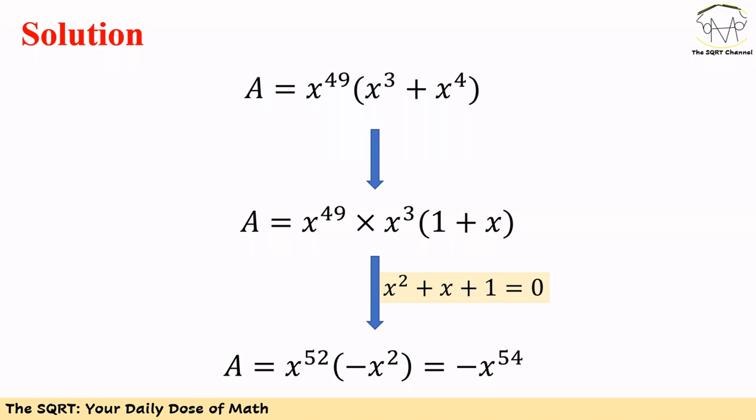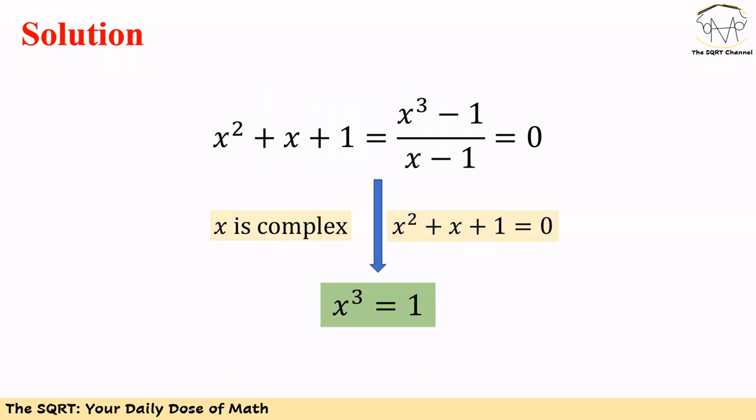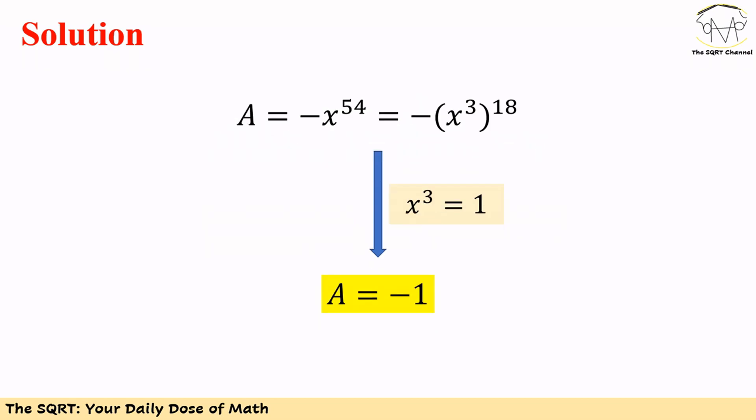To simplify further, we use the identity x³ - 1 = (x² + x + 1)(x - 1). Rearranging, x² + x + 1 = (x³ - 1)/(x - 1). Since x² + x + 1 = 0 for this problem, we conclude that x³ = 1. Remember, x is a complex number — we won't find the explicit value of x; we just use x³ = 1 going forward.